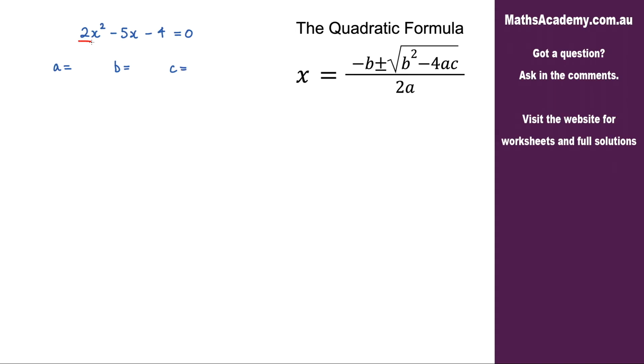The a value is the coefficient of the x squared term, so that is 2. The b value is the coefficient of the x term, that's negative 5, and the c, well that's the constant, it's negative 4.